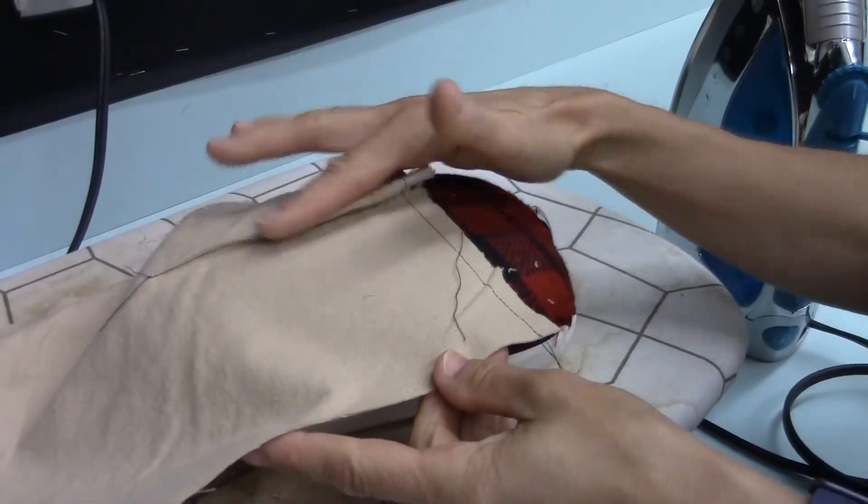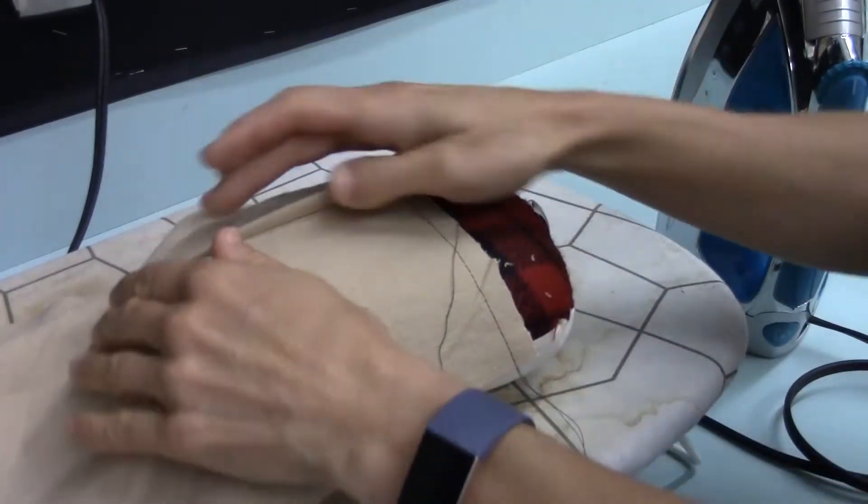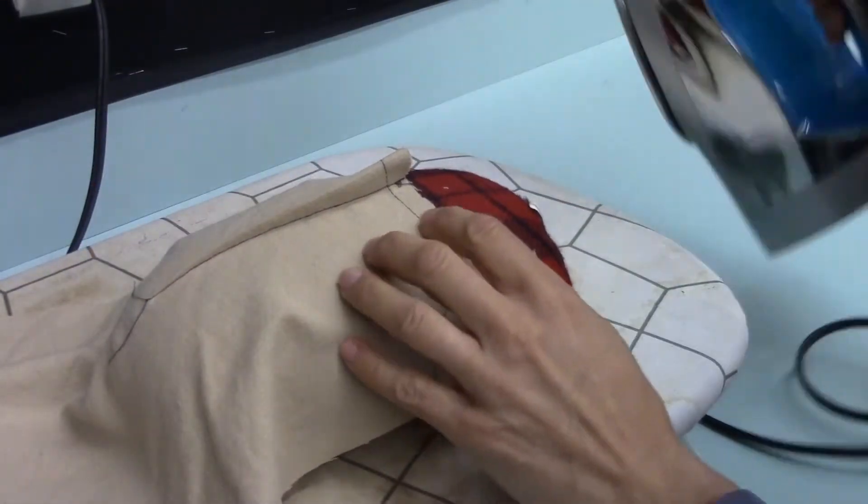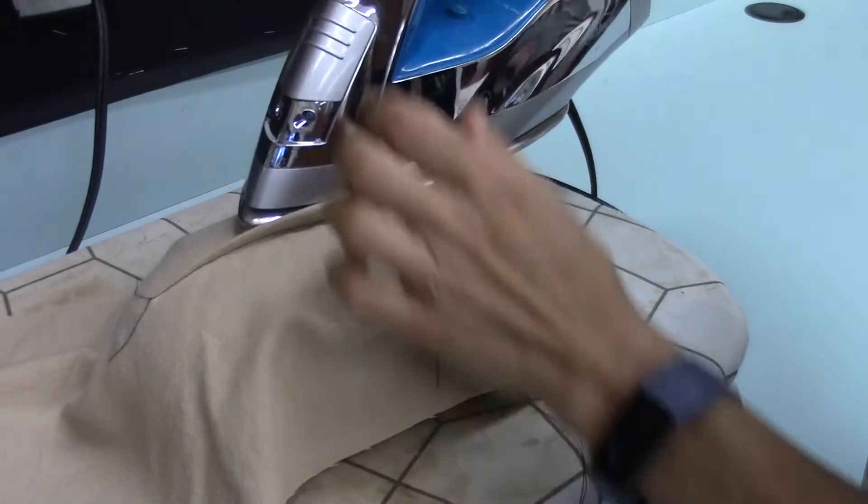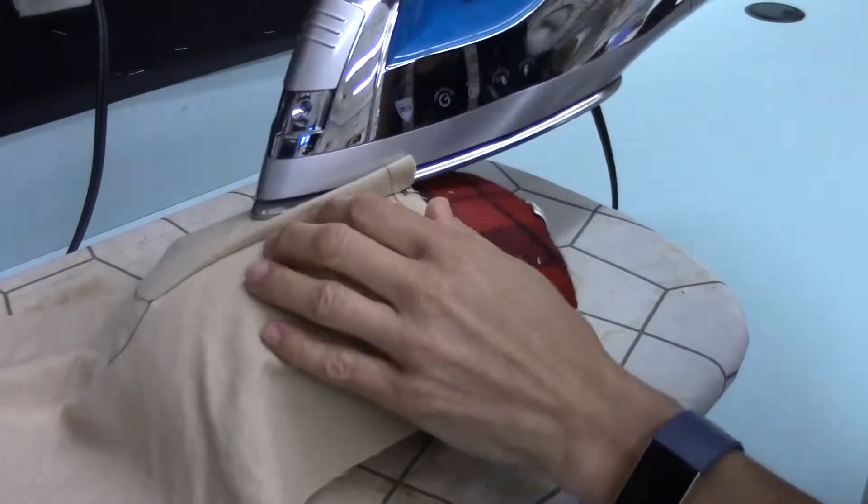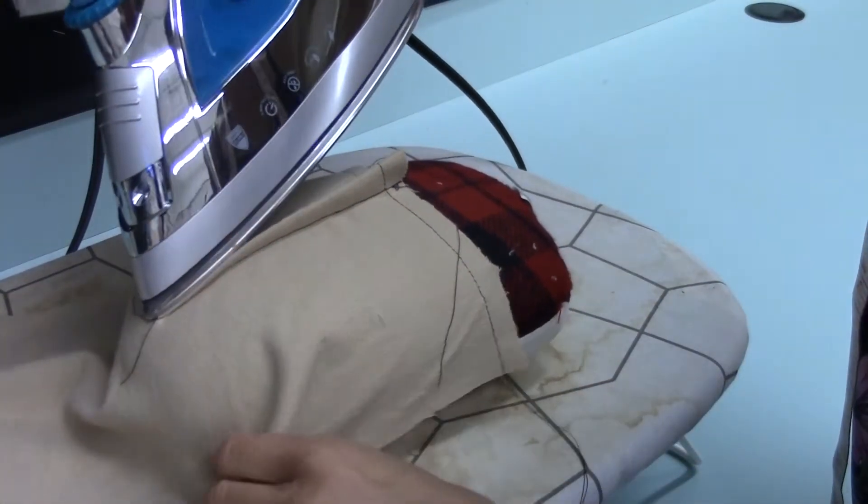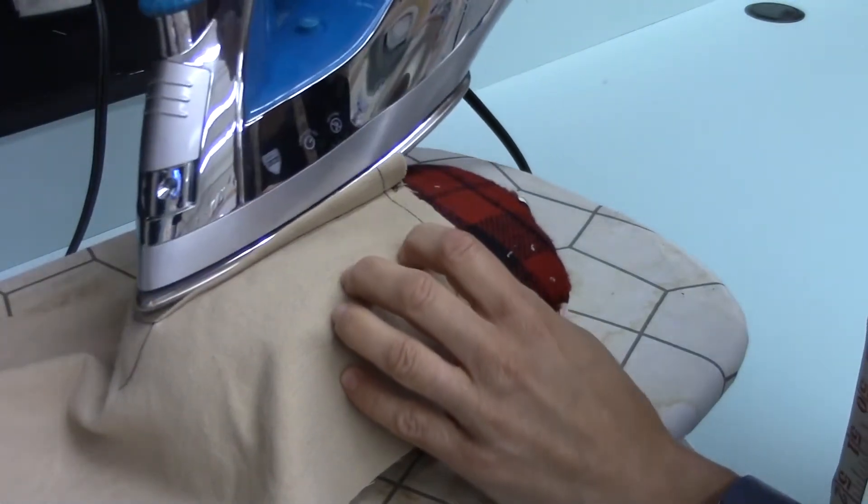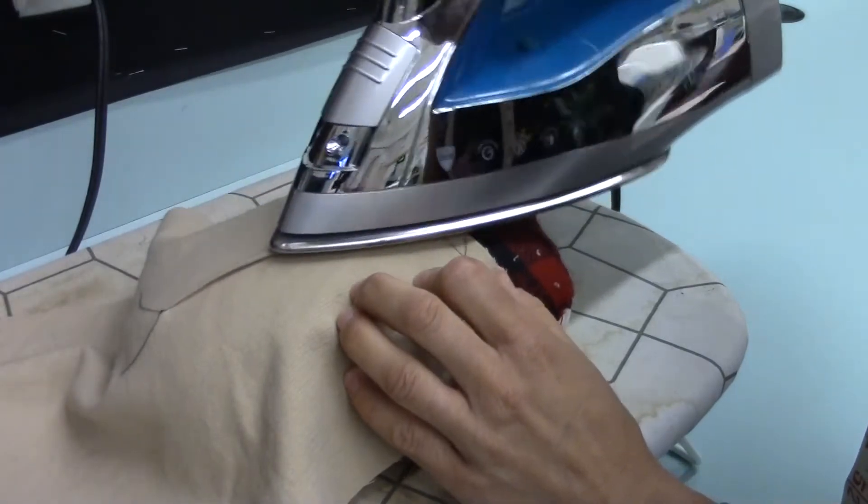We're going to press the back ones towards the center back. Remember if you have a ham that you want to put the point along here. And you're going to press right along that tip, right along the side, and then press it down.